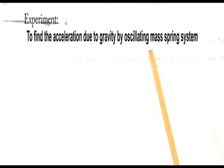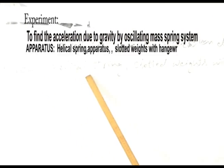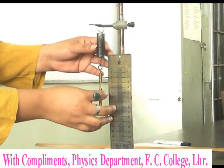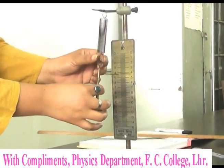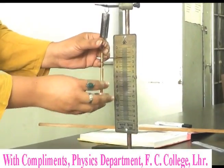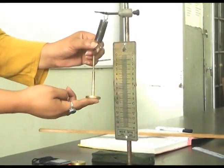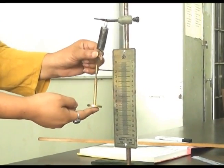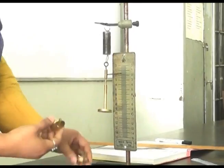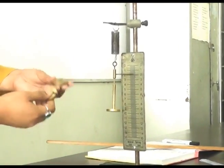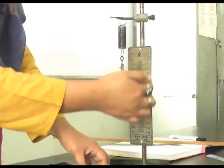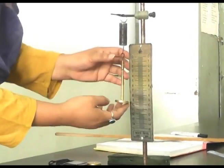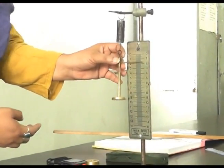For calculating the value of acceleration, we will use the apparatus: helical spring, slotted weights with hanger. This is the helical spring in which we will produce the extension. These are the slotted weights. This is the first one including hanger, this weight carries 50 gram. And these are the extra weights, each carrying 50 grams. And this is the scale on which we will take the reading of extension in the spring.